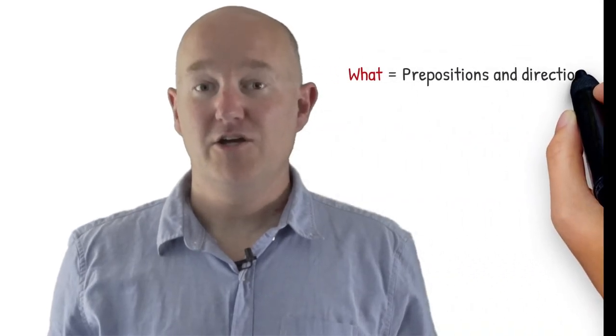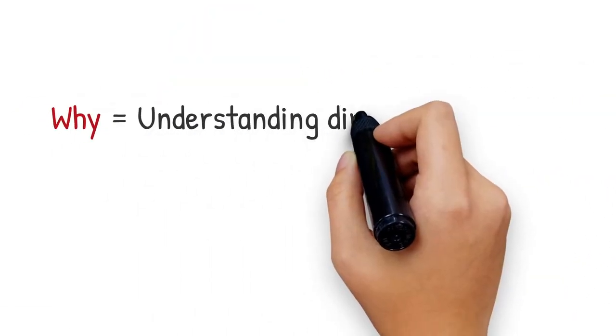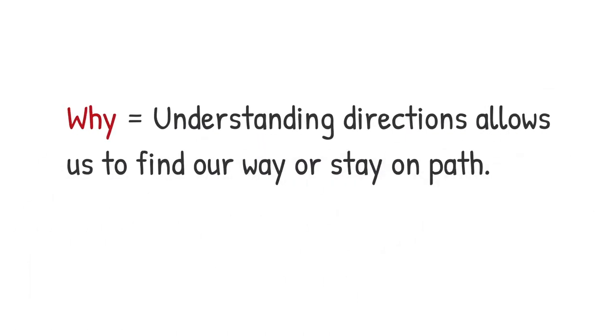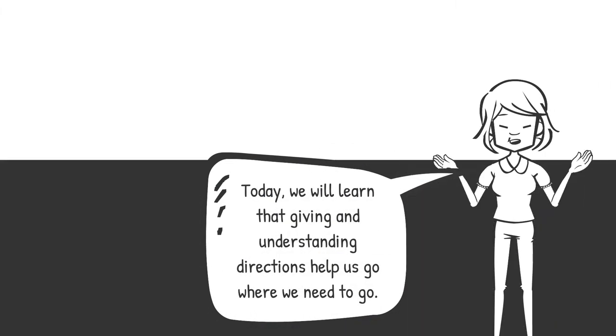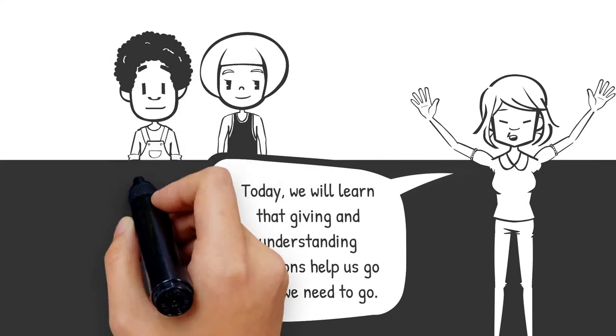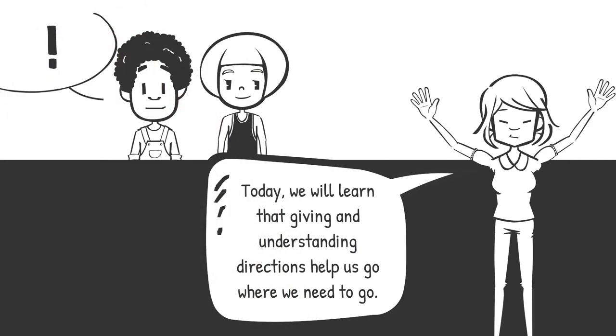Let's take a look at some examples. First, a project where students need to draw a map and give directions to other students. The 'what' of the intention here could be prepositions and directions. The 'why' could be understanding that directions allow us to find our way or stay on path. A possible lesson intention communicated to students could be: 'Today we will learn that giving and understanding directions help us go where we need to go.'